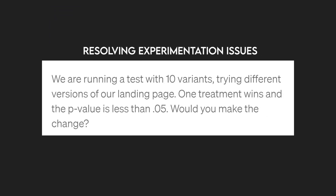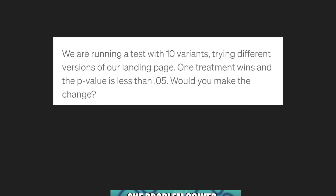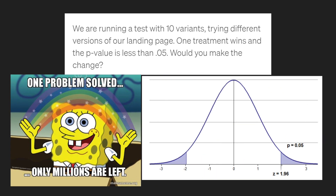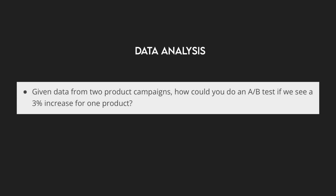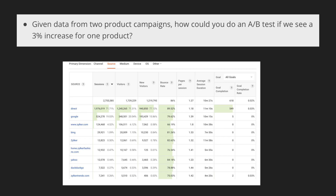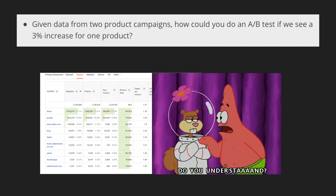Resolving experimentation issues: We are running a test with 10 variants trying different versions of our landing page. One treatment wins and the p-value is less than 0.05. Would you make this change? Here, they're testing if you can deal with real-life scenarios and edge cases that make A-B tests hard. The answer is always 'it depends' — never say yes or no. They're testing your thought process for identifying edge cases and what can go wrong. Data analysis: Given data from two product campaigns, how could you do an A-B test if we see a 3% increase for one product? This tests whether you understand how to set up A-B tests and the underlying theory.